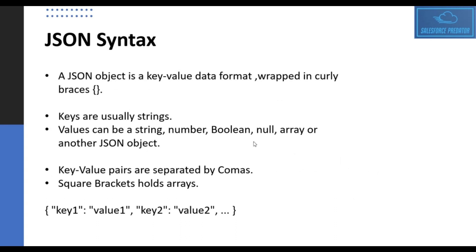A JSON object is a key-value data format wrapped in curly braces, where keys are usually strings and values can be a string, number, boolean, null, array, or even another JSON object. These key-value pairs are separated by commas. Square brackets are used to hold arrays in a JSON object.